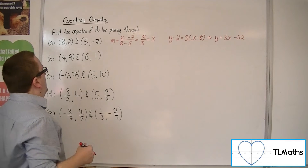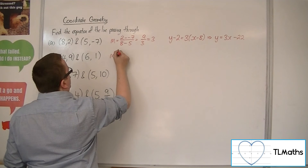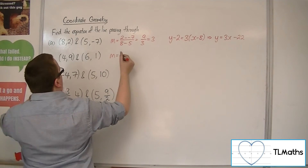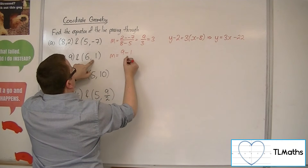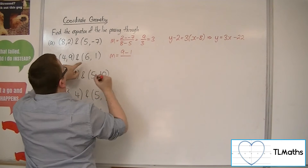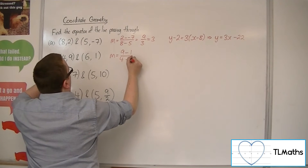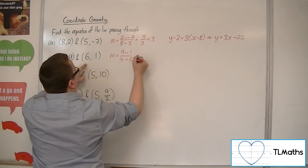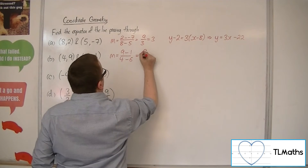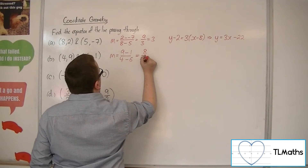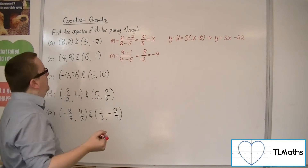For b, (4, 9) and (6, 1). The gradient: the difference in the y-coordinates, so 9 take away 1, over the difference in the x-coordinates, 4 take away 6.